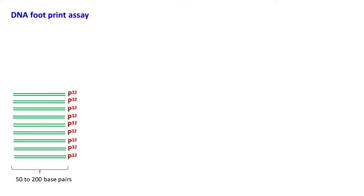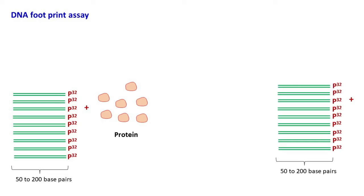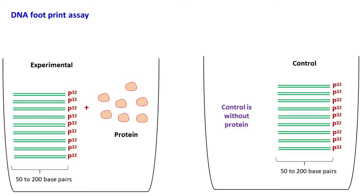In the next step, the DNA segment that has been amplified by PCR is mixed with the protein. Next, we will also set up a control system where the protein is not added. The control will only have the labelled DNA fragments.